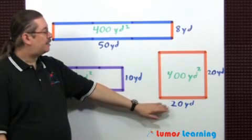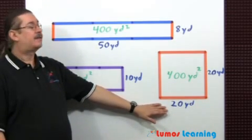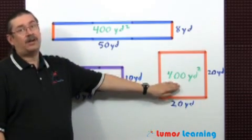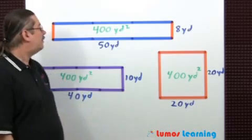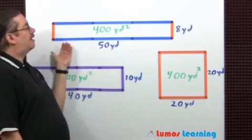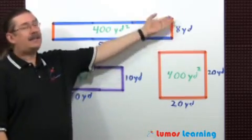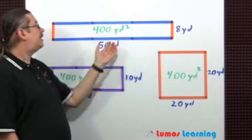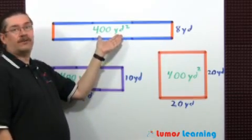First one is 20 yards by 20 yards. That will give you an area of 400 square yards. Another example could be something like this: 50 yards by 8 yards. If you multiply the dimensions together, you again get 400 square yards.